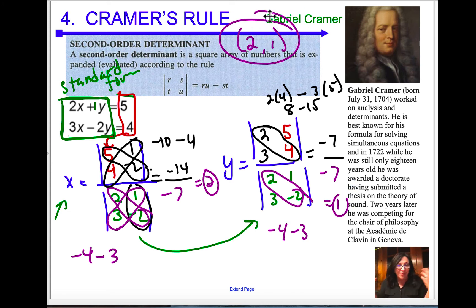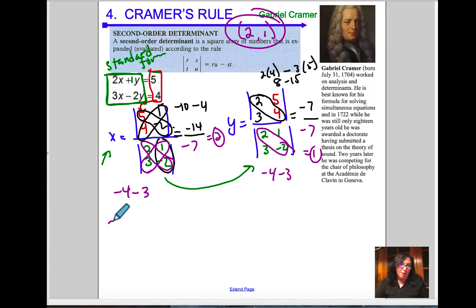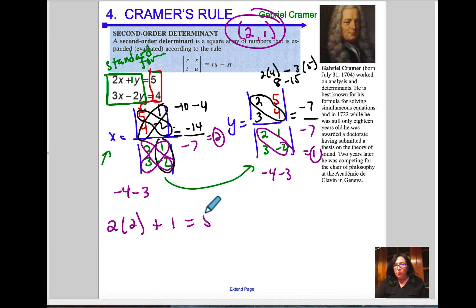So my intersection point for these two graphs is (2, 1). Of course you should check your answers — why wouldn't you? I would go 2 times 2 plus 1 equals 5, so 4 plus 1 does equal 5. This is what we call Cramer's Rule — we use it for determinants.